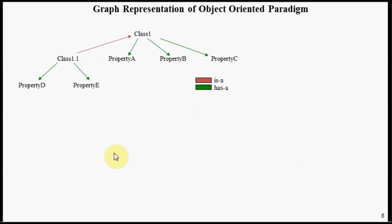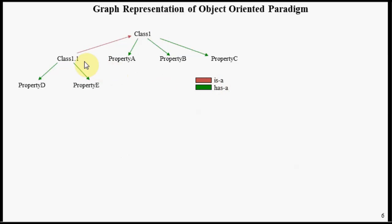The object-oriented paradigm can be represented as a graph problem. Here we have a class called Class 1, which has properties A, B, and C, and a 'has a' relationship between the class definition and its associated properties. We also have another class called Class 1.1 with properties D and E, and we see an 'is a' relationship between these two nodes, meaning that Class 1.1 is a specialization of Class 1.